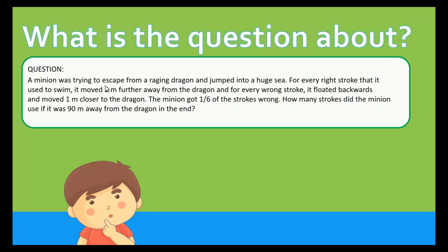A minion was trying to escape from a raging dragon and jumped into a huge sea. For every right stroke that it used to swim, it moved 2 meters further away from the dragon. And for every wrong stroke, it floated backwards and moved 1 meter closer to the dragon. The minion got 1/6 of the strokes wrong. How many strokes did the minion use if it was 90 meters away from the dragon in the end?